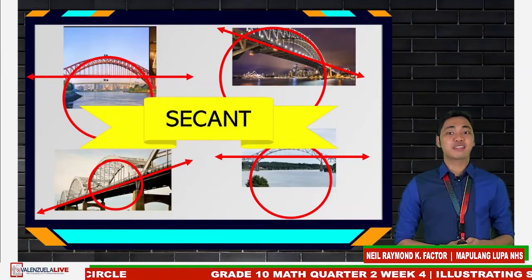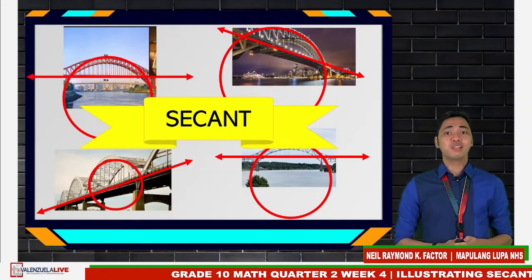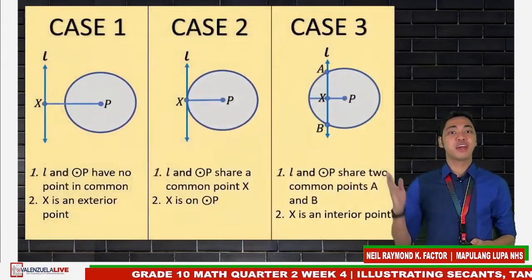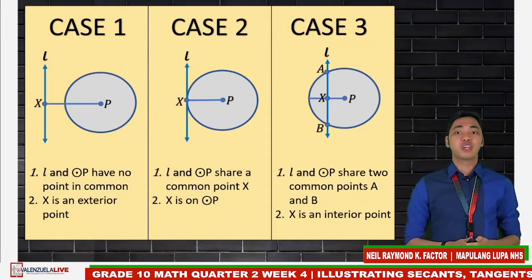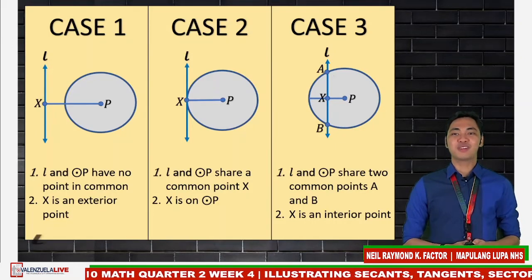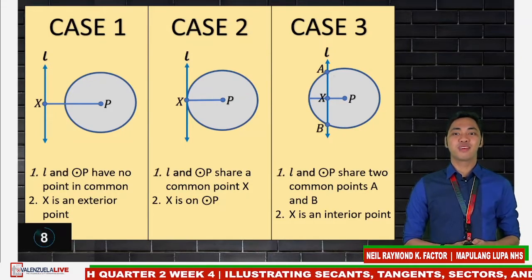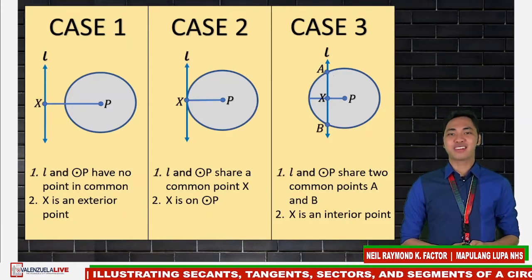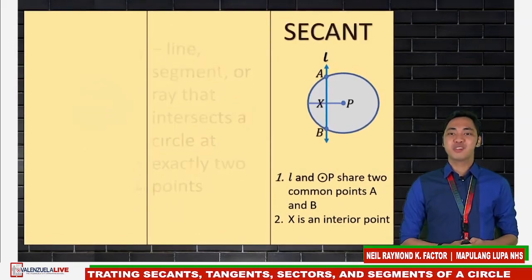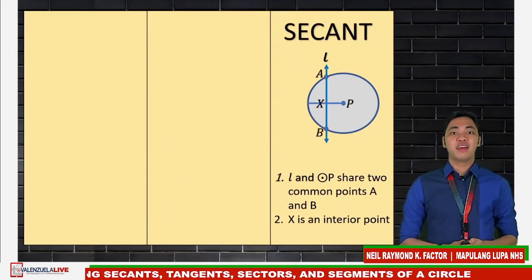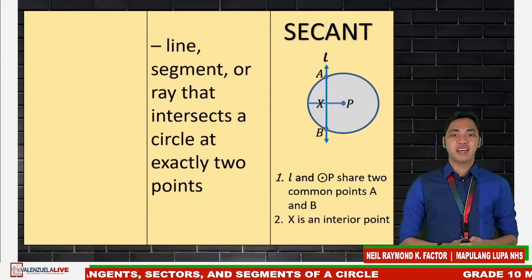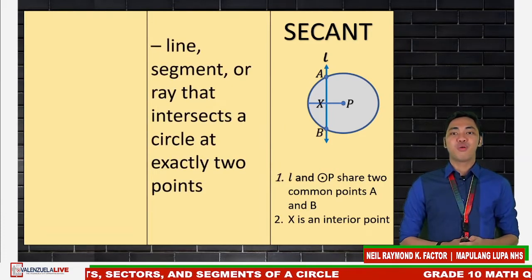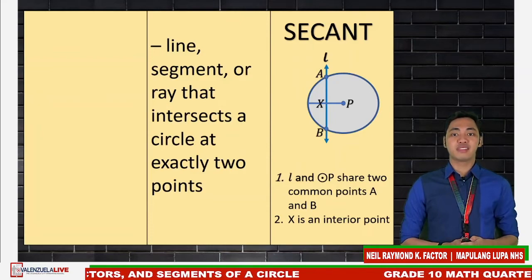I know by now you can define secants on your own. But let's go back to these three cases. Which case would illustrate a secant? Case 3 illustrates a secant. Line L and circle P share two common points, which are A and B. A secant is a line, a segment, or a ray that intersects a circle at exactly two points.